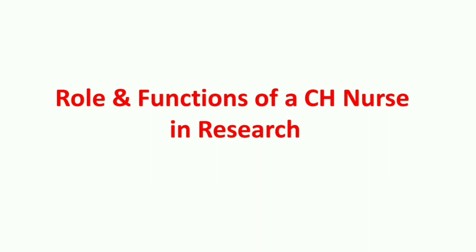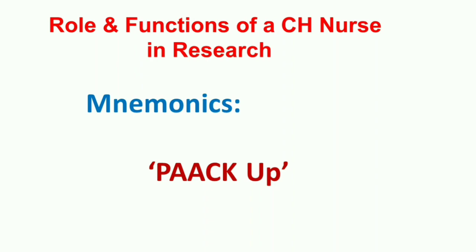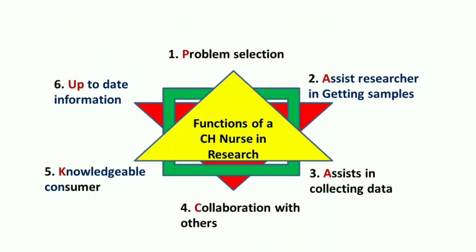The last part covers role and functions of the community health nurse in research. The mnemonic is PAACKUP. The functions are: P — problem selection; first A — assist researchers in getting samples; second A — assist in collecting data; C — collaboration with other health-related sectors and researchers; K — act as a knowledgeable consumer; U — up-to-date information.